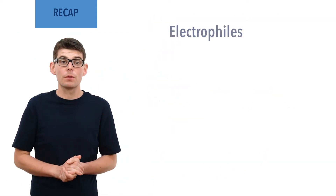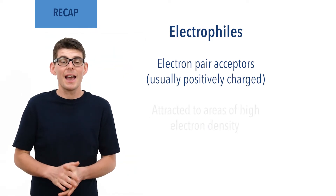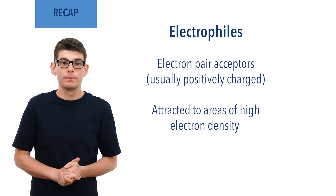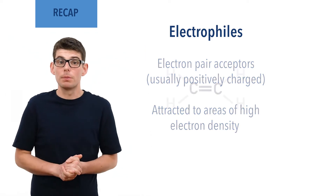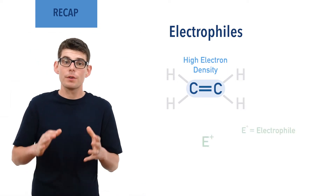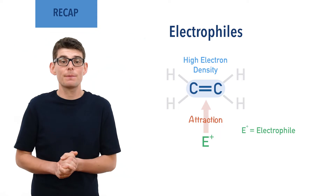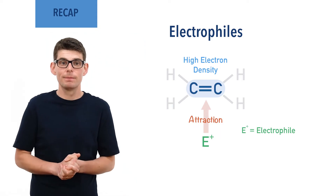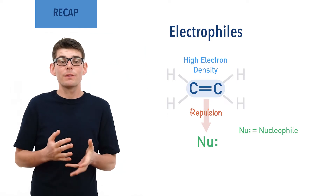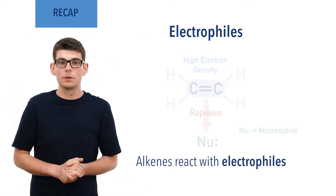Electrophiles are electron pair acceptors. They are attracted to areas of high electron density and are electron deficient, often with a positive charge. A carbon-carbon double bond is a region of high electron density and electrophiles are attracted to this area in a molecule, making alkenes susceptible to electrophilic attack. Nucleophiles would be repelled by this high electron density and this is why alkenes react with electrophiles rather than nucleophiles.